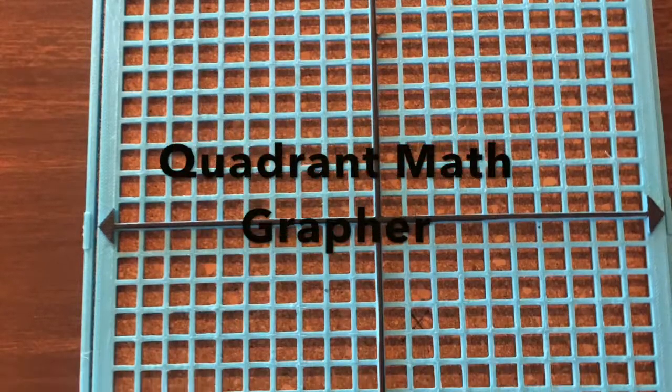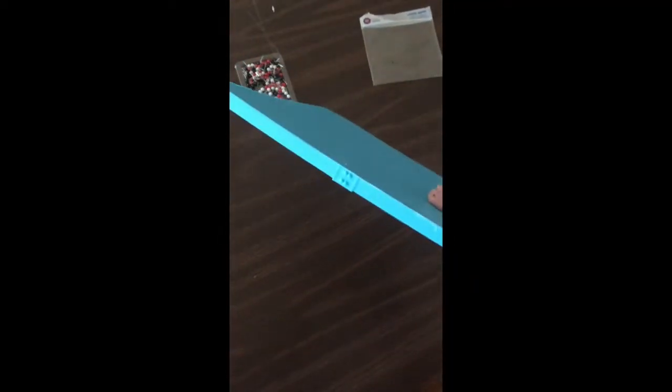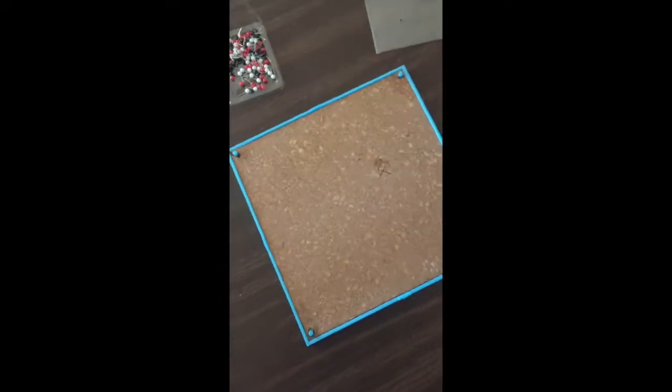Quadrant math grapher: This is a 3D printed base about nine inches by nine inches with a thin base border all along the sides. There is a thin piece of corkboard that is cut to size and glued onto the base to allow the placement of pins.